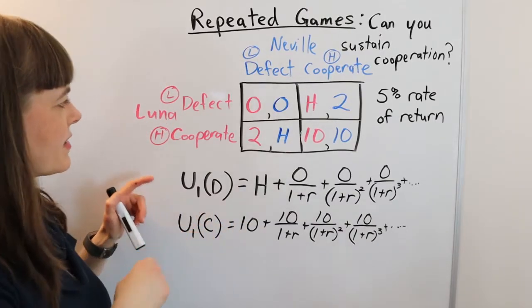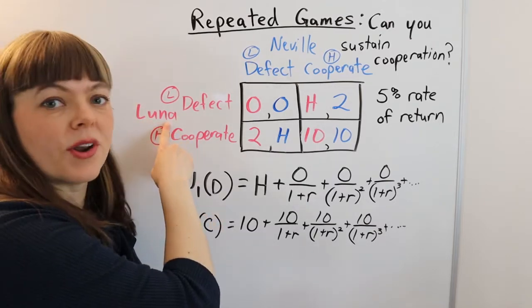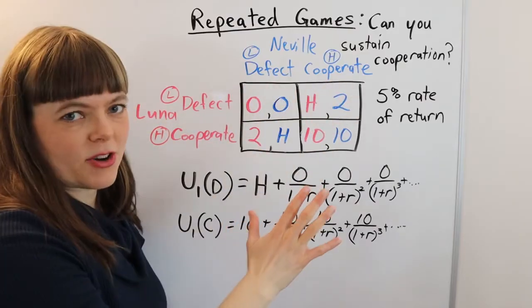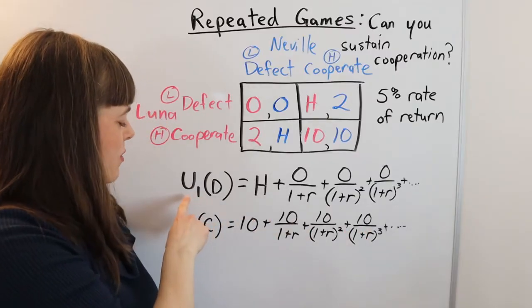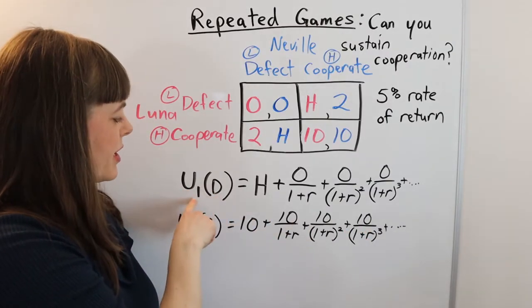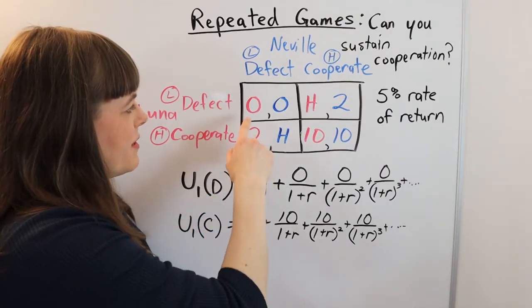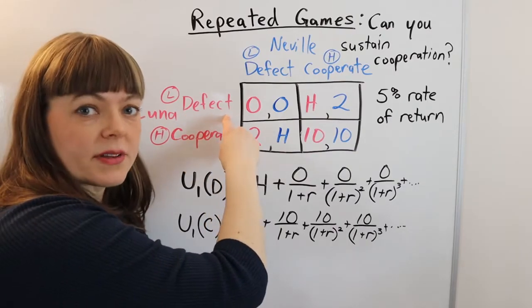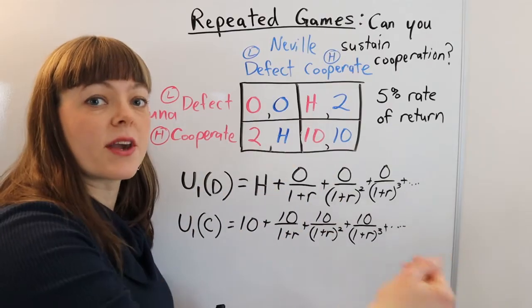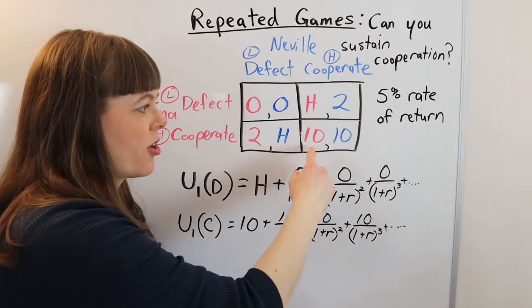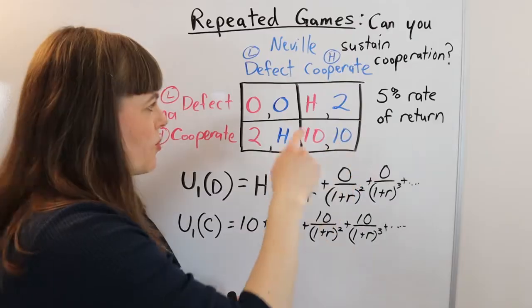So how have I set this up? I basically looked from one player's perspective and I've started here with player one, player one's perspective, Luna, but this is a symmetric game. So if we were to set up Neville's perspective, we would have the same equations. And we say, what is the utility to Luna to player one of defecting? And we see that the utility from defecting is, okay, if she defects when the other player goes grim trigger, and by the way, that's the assumption here is that the other player is going grim trigger. If they go grim trigger, do you have an incentive to cooperate forever?